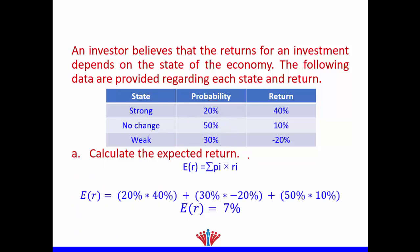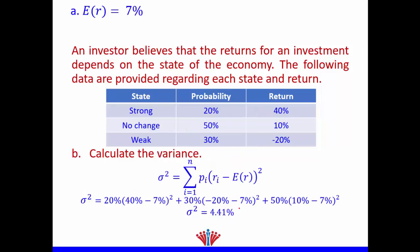Let's start with the first part — expected return. The formula is the summation of each probability multiplied by its return. So: 20% × 40% plus 50% × 10% plus 30% × (−20%). This gives us an expected return of 7%.